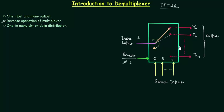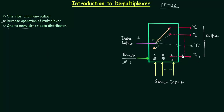In the same way if we have y5 and we want this data input i to be transferred to y5, then we have to make the select inputs equal to one zero one and i will be transferred to y5. So this is the simple operation for the demultiplexer, and this is also called as a one-to-many circuit because single data input is transferred to many outputs, and also a data distributor because the data is distributed to many outputs.